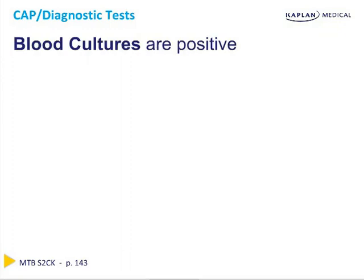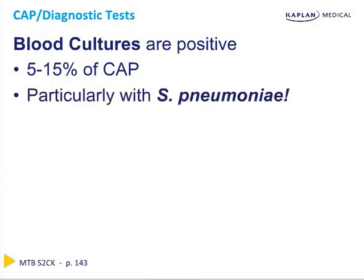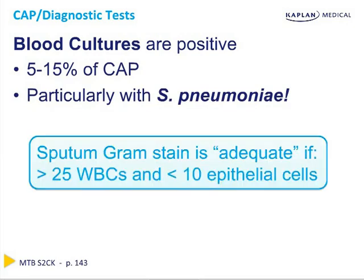In community-acquired pneumonia, blood cultures are typically negative but can be positive in about 5–15% of cases. This is particularly common with Strep pneumo. With regard to sputum cultures, a sputum gram stain is considered adequate if you have greater than 25 white blood cells per high power field and less than 10 epithelial cells. If there are greater than 10 epithelial cells and less than 25 whites, you're likely dealing with a sample that is mostly saliva and not indicative of what's going on in the lung.